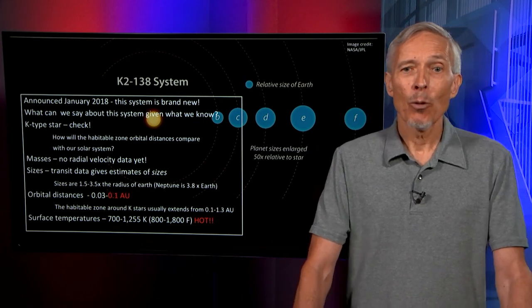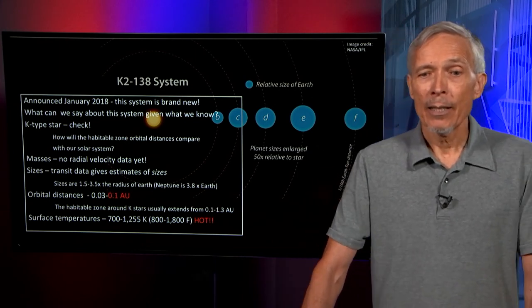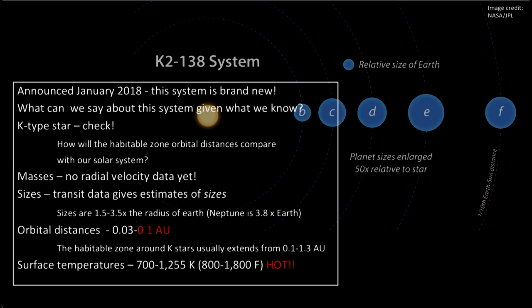The sizes are measured by the transit data and these sizes are between 1.5 and 3.5 times the radius of the earth. For comparison, Neptune is 3.8 times the size of the earth. So these are almost Neptune-like objects and may have significant gaseous envelopes. Their orbital distances are between 0.03 and 0.1 AU.